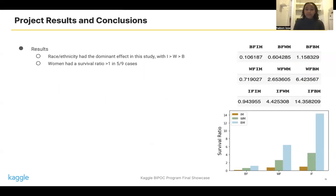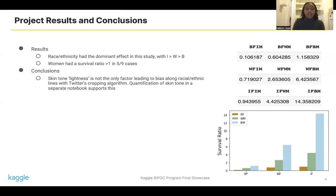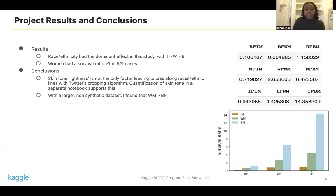Women had a survival ratio of greater than one in five out of nine cases. So like the original study, there is still a preference for women, but it's not as strong. I can conclude that skin tone lightness isn't the only factor that leads to bias along racial and ethnic lines with Twitter's cropping algorithm. I did quantify skin tone to make sure that it wasn't ordered Indian, white, and Black the way that I found in my data. I used a larger non-synthetic dataset and found that, unlike the original study, white men were actually preferred to Black females, although general trends remain the same throughout my current study.